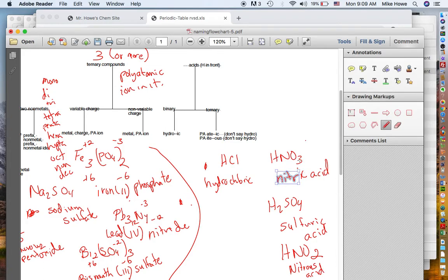So ATE endings become IC. The ITE endings become OUS. And once again, binaries like HI for example, you say hydro and then whatever the name of the element is. So this is iodine. Hydro-iodine, but it becomes hydroiodic. You drop the ine and make it an IC ending right here. Hydro-something-ic. That's a brief overview of how to name things, and I'll stop it there and post it.